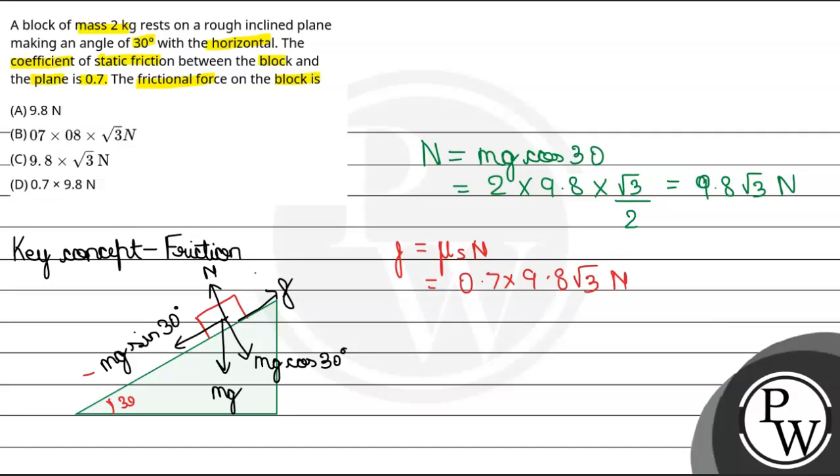This is the value, but we also need to find mg sin 30, which is the applied force basically. We'll denote this as F. Let's find this value first. This will be 2 into 9.8 into 1 by 2. This value is 9.8.